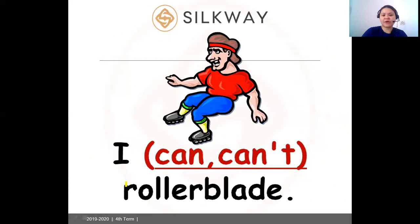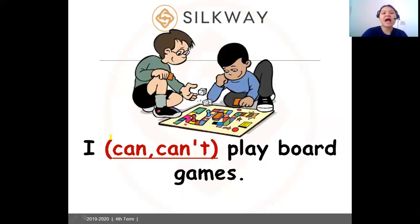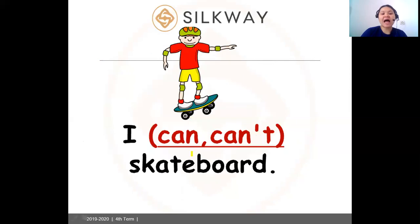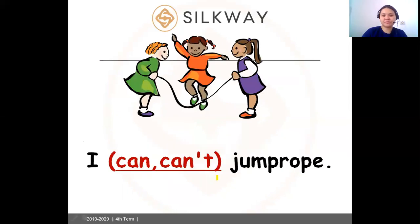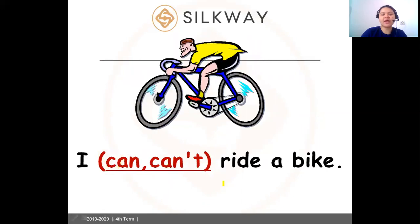You can also say: I can or I can't rollerblade. Next: I can or I can't play board games. Next: I can or I can't skateboard. And: I can or I can't jump rope — we can also say skip. Let's continue: I can or I can't ride a bike.